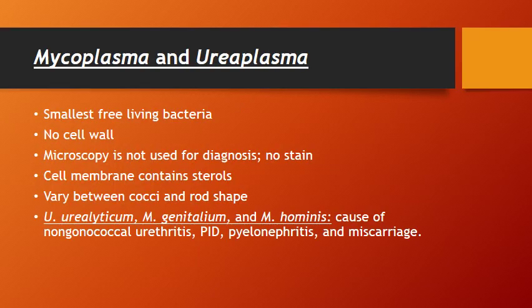These organisms are the smallest free-living bacteria in the world. They're able to pass through most filtration systems used to remove bacteria, and they were initially confused with viruses as a result of this, because viruses are characterized as filterable agents. These organisms are only about 0.1 to 0.2 micrometers in diameter, while most bacteria are anywhere from 0.5 to 1 micrometer wide — so these are really, really small.